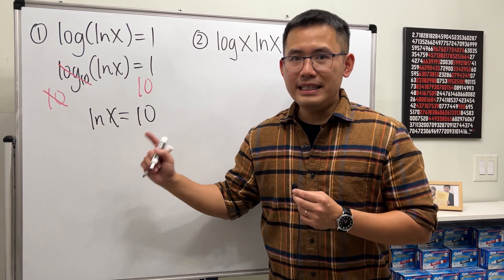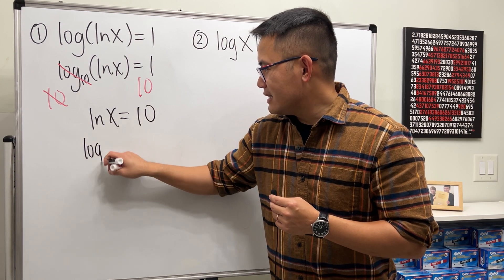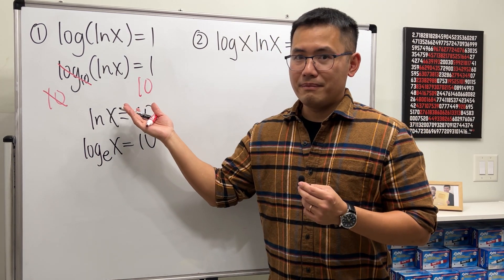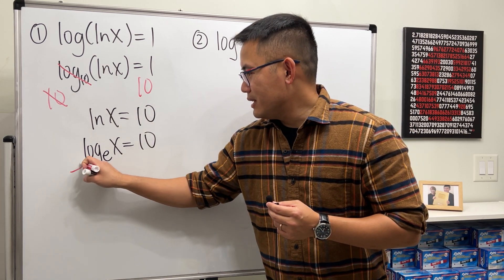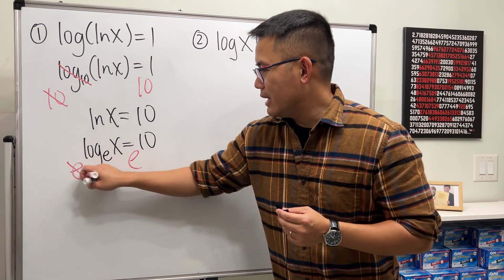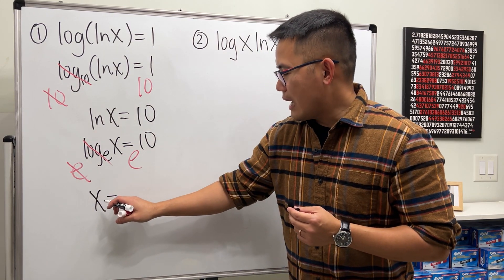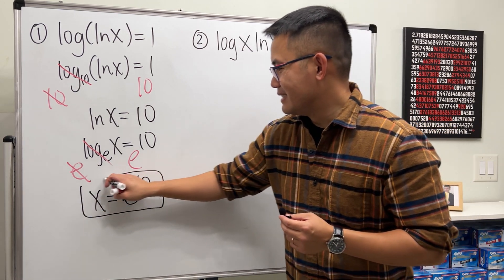Now what's ln? ln is also a log, log base e. So we can write this as log base e of x and that's equal to 10 and do the same thing. e is about 2.718 right, so just do e to the power, e to the power, and then cancel and we're just going to write down x is equal to e to the 10th power and that's it.